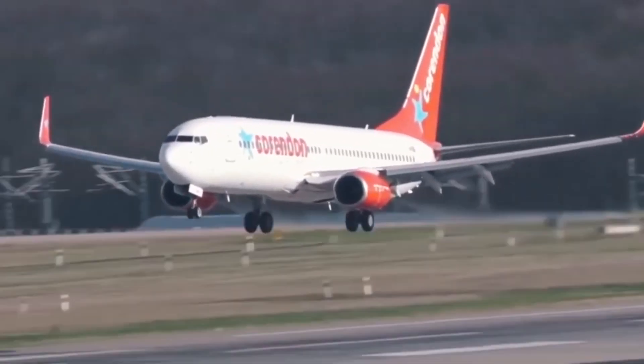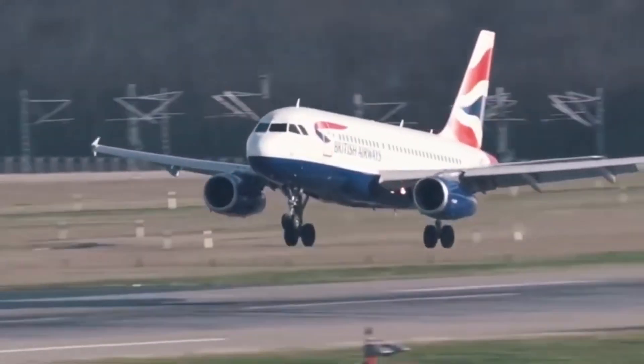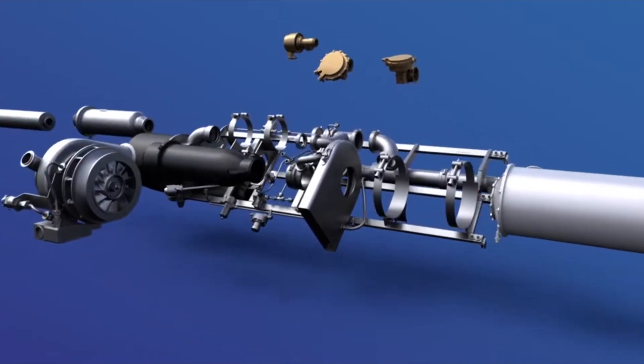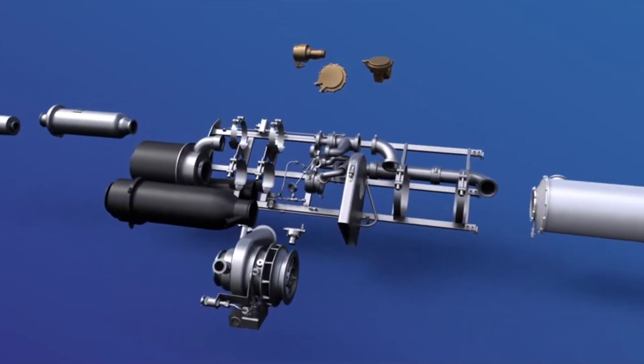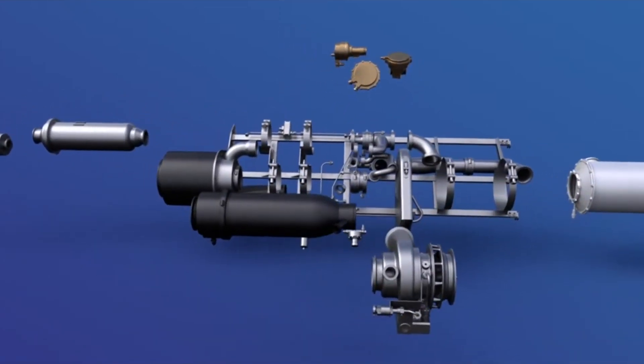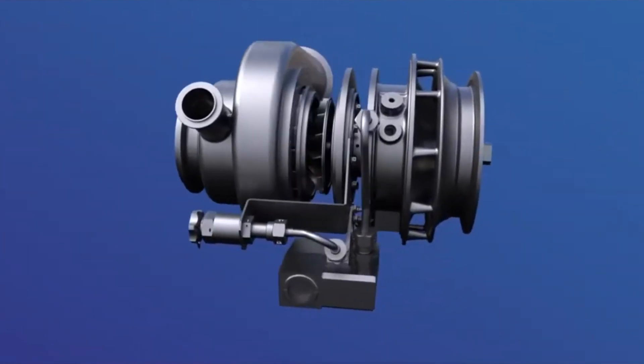In aeronautics, an environmental control system (ECS) of an aircraft is an essential component which provides air supply, thermal control, and cabin pressurization for the crew and passengers.